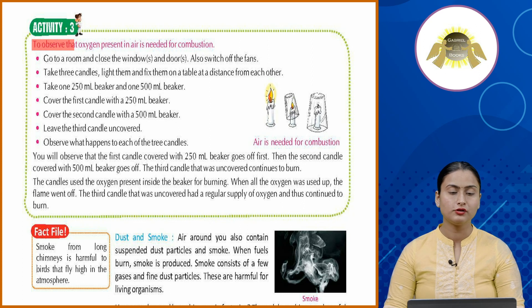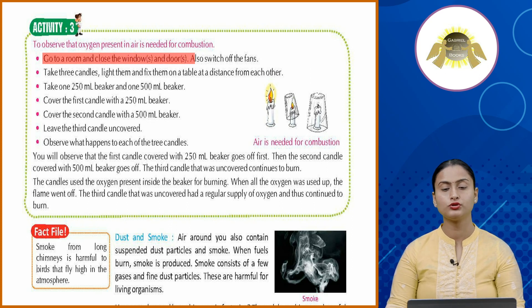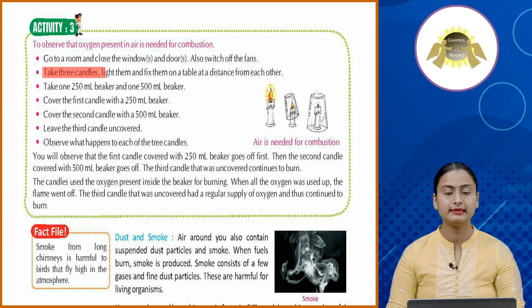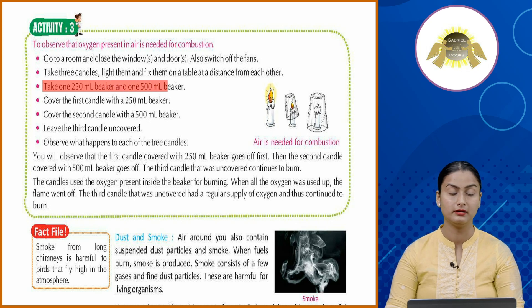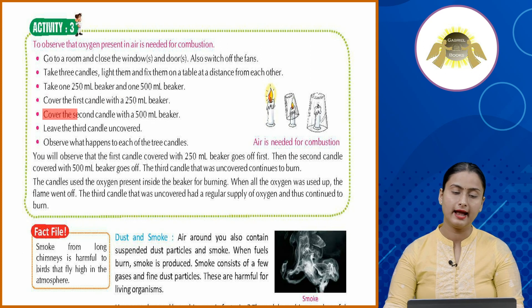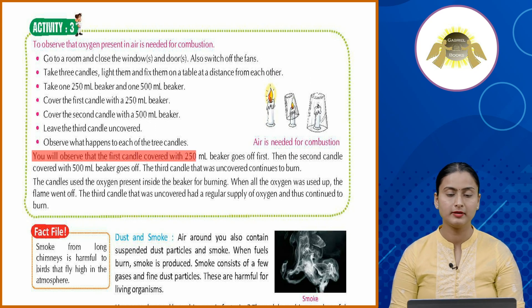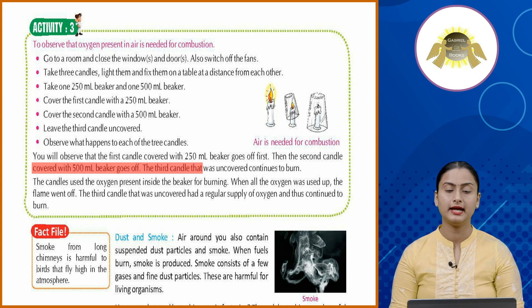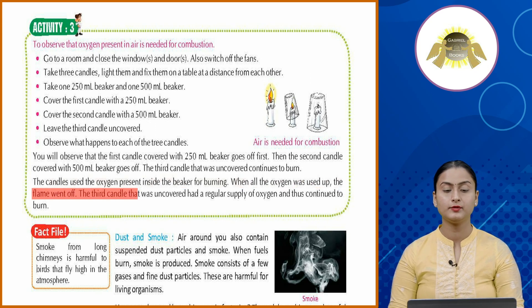Activity 3 — to observe that oxygen present in air is needed for combustion: Go to a room, close windows and doors, switch off the fans. Take three candles, light them, and fix them on a table. Cover the first candle with a 250 ml beaker and the second with a 500 ml beaker; leave the third uncovered. The first candle goes off first, then the second, while the third continues to burn because it has a regular supply of oxygen.